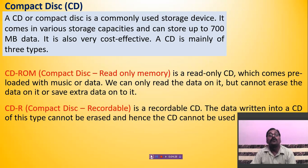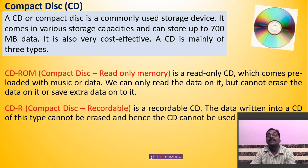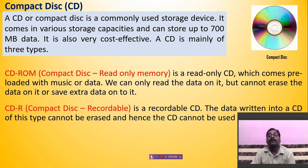The CD comes in various storage capacities like 700 megabytes and more. It is also very cost-effective, meaning it is cheaper than other storage devices. A CD is mainly of three types. You can see the picture of a CD — that is a compact disk — on screen.